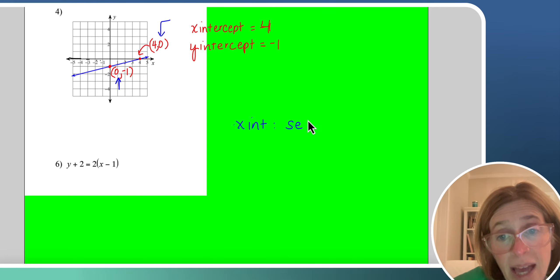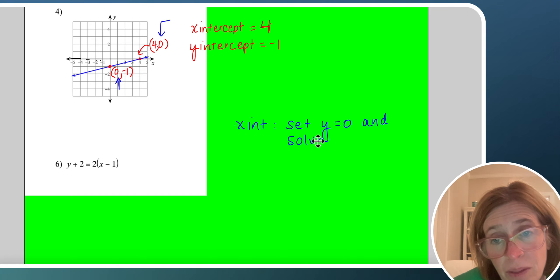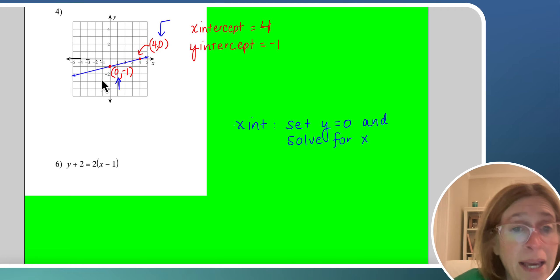So anytime you're trying to find the x intercept, you want to set y equal to 0 and solve for x. And if you're looking for the y intercept right here, you're going to set x equal to 0 and solve for y.